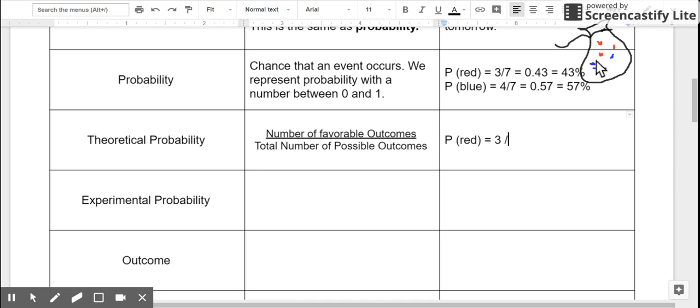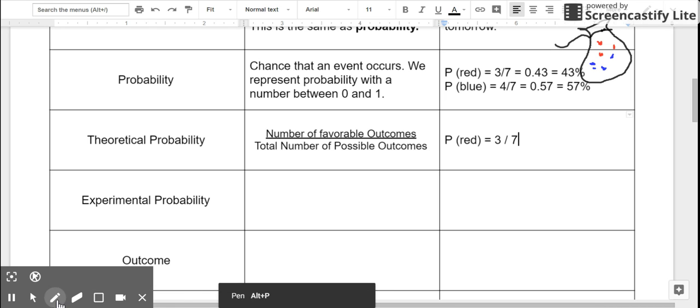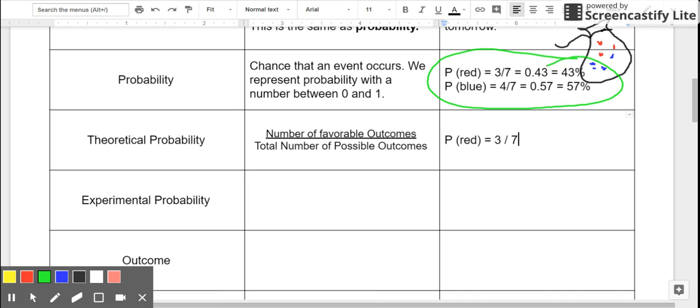The total number of possible outcomes, that would be 7 because there are 1, 2, 3, 4, 5, 6, 7. So what we've already calculated up here, this is our theoretical probability. So in other words, we're using reasoning to calculate probabilities.